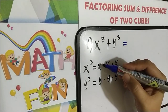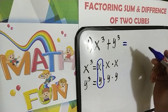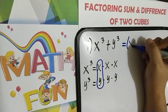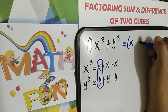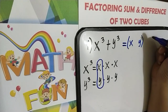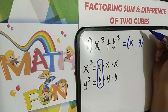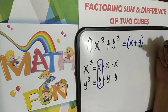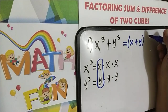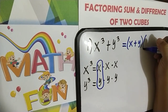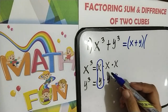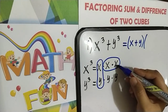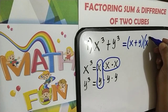By using the first pair, x and y, we have now the first factor, which is a binomial — x and y. The question is, what is the operation of our binomial? Since the given is plus, our first factor should be plus. For the second factor, we are going to use the second pair. That is x and x — x times x — that is x squared.